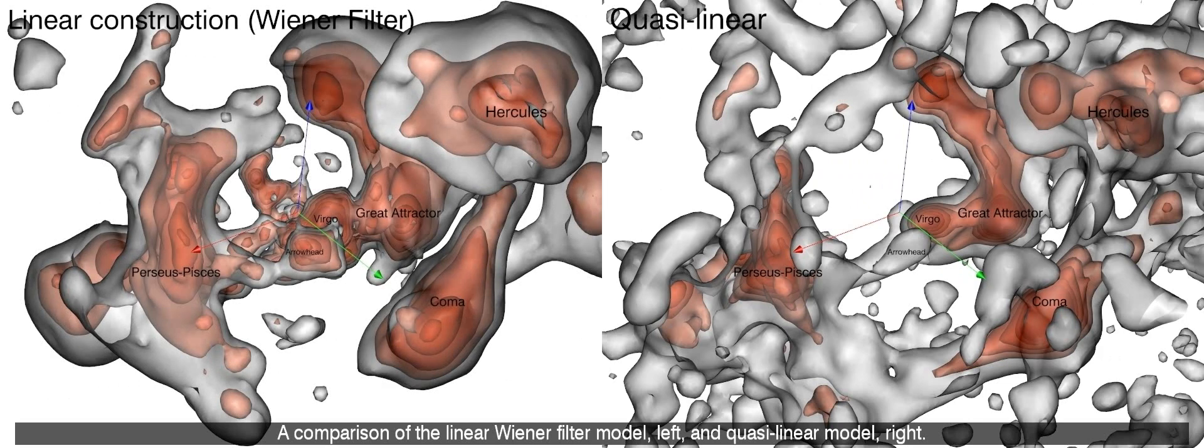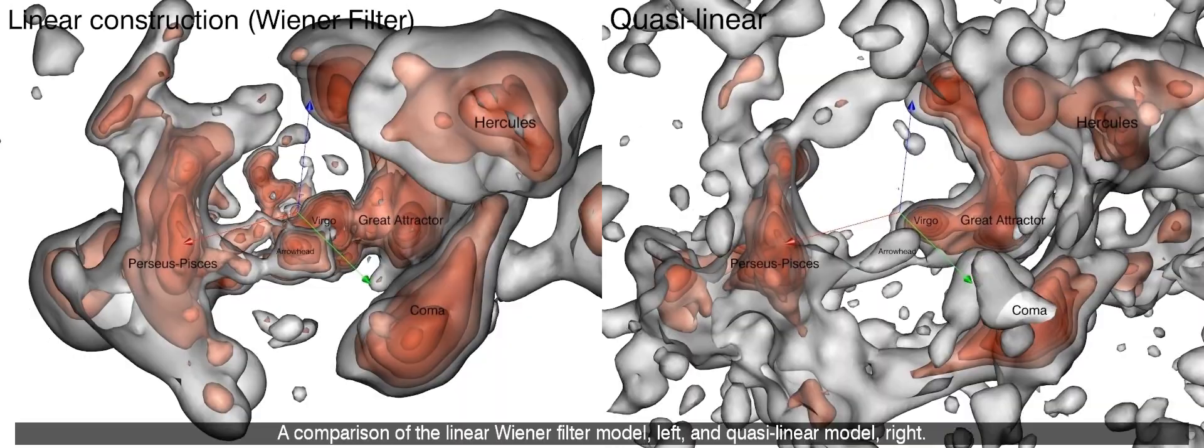A comparison of the linear Wiener filter model, left, and quasi-linear model, right.